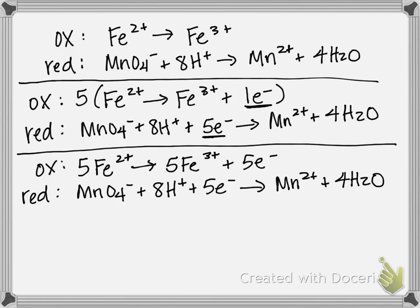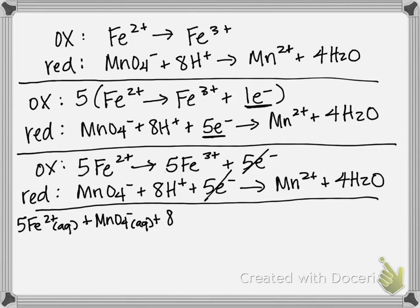Step 6 is going to be to add these guys up together. Immediately, we can see my electrons are going to cancel, 5 and 5. And these should cancel every time. If they don't, then you've gone wrong somewhere. Nothing else is the same on both sides, so nothing else is going to cancel. Therefore, my final reaction should be 5 Fe2+ aqueous plus MnO4- aqueous plus 8 H+ aqueous gives you 5 Fe3+ aqueous plus Mn2+ aqueous plus 4 H2O liquid. And that should be your final answer.